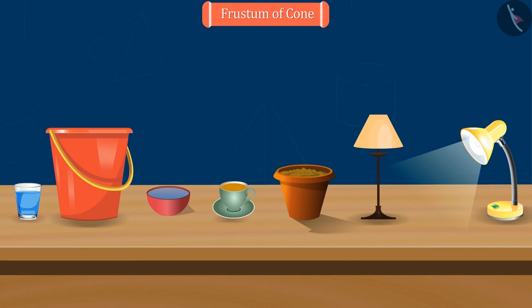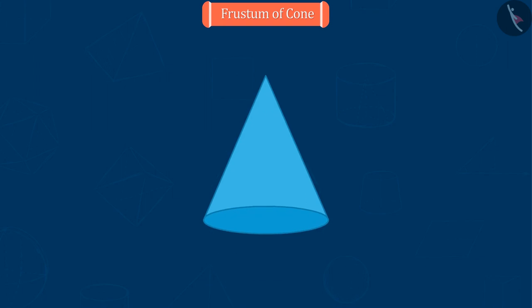Let us now observe it. To understand the frustum of a cone, let's take a cone whose height is capital H, capital L is the slant height, and capital R is the radius.